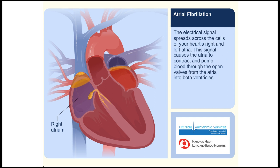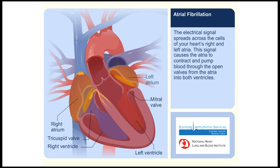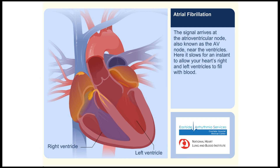The electrical signal spreads across the cells of your heart's right and left atria. This signal causes the atria to contract and pump blood through the open valves from the atria into both ventricles. The signal arrives at the atrioventricular node, also known as the AV node, near the ventricles, where it slows for an instant to allow your heart's right and left ventricles to fill with blood.